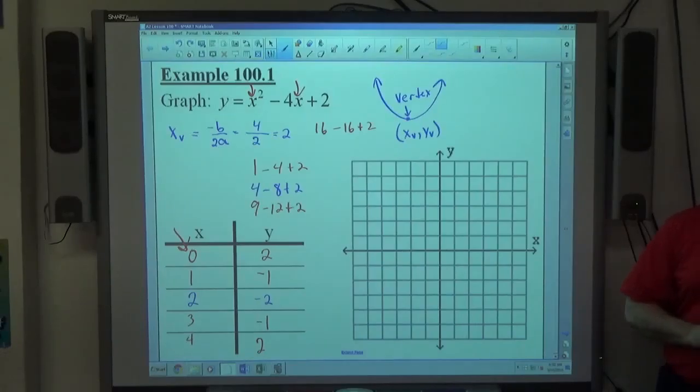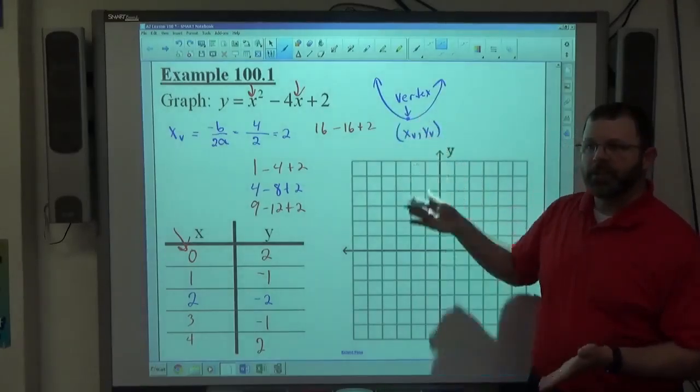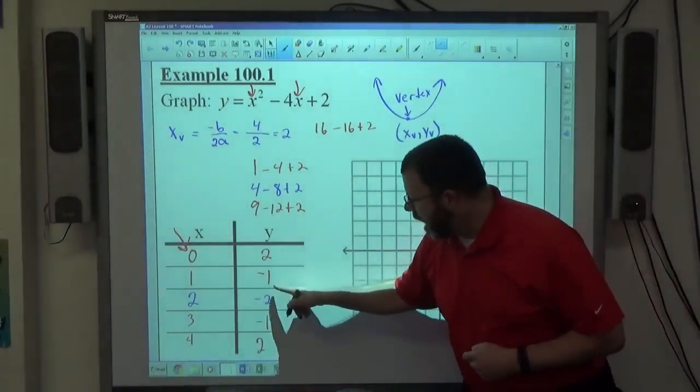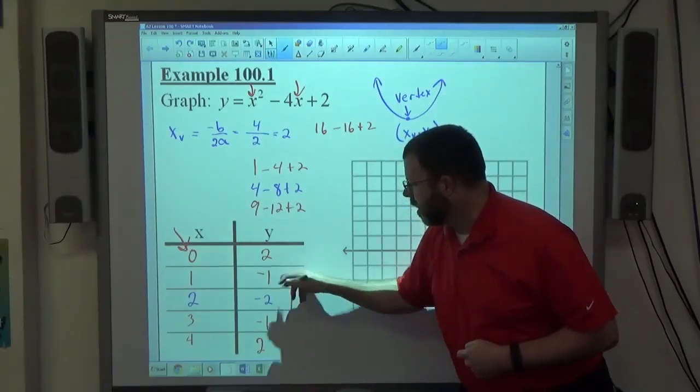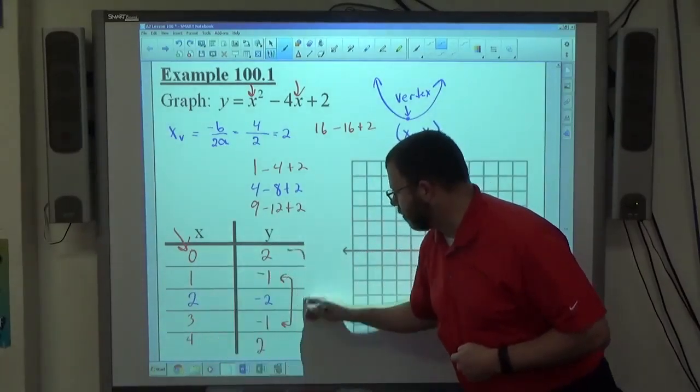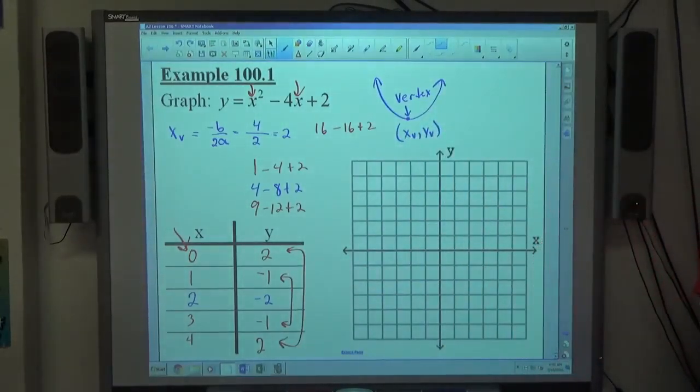Now something that happens here that you should expect to happen is some symmetry. Okay. I go equal distance away from the vertex, I go to the equal height. So notice, I'm 1 away and 1 away. These are the same number. I'm 2 away and 2 away and these are the same number. Okay. If you get symmetry, you're on the right track here.